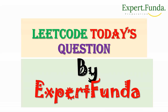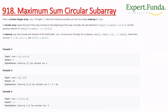Today's question is LeetCode 918 — Maximum Sum Circular Subarray. The problem statement says: given a circular integer array of length n, return the maximum possible sum. Let's understand what a circular array means and its properties.